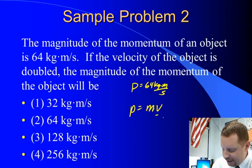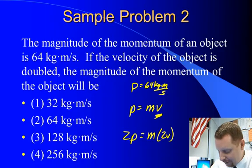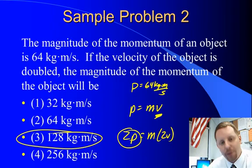If the velocity is doubled, what's going to happen to the momentum of the object? Well, if you double the velocity by multiplying the right-hand side by 2, M times 2V, you also have to multiply the left-hand side by 2. So you would have twice the momentum or 128 kilogram meters per second.